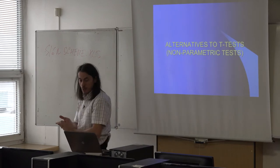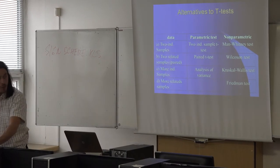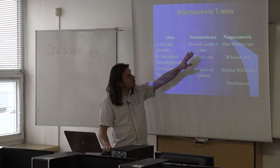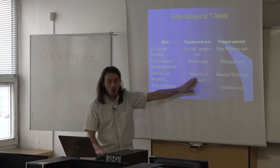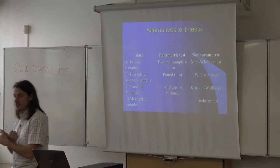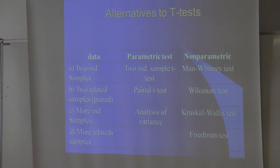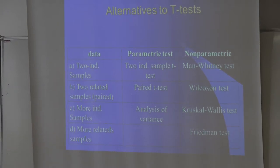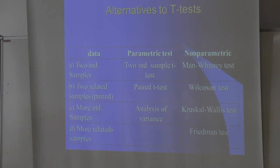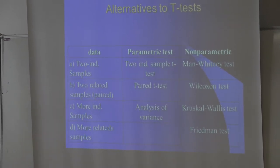Let's discuss alternatives to t-tests or analysis of variance: non-parametric tests. If you compute t-tests — whether two independent sample or paired sample t-tests — or analysis of variance, there are assumptions about the size of your data file, the number of respondents, and the distribution of your variable. Usually you expect at least a certain number of respondents per group, and if not, your data should be normally distributed. If these assumptions are not met, it is not statistically allowed to use these tests. We call them parametric because your data should have certain parameters.